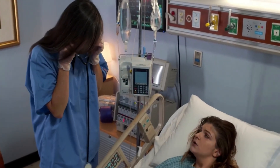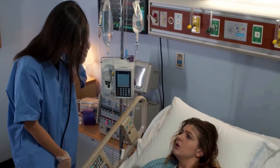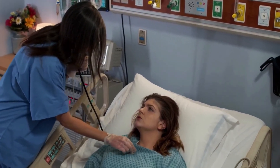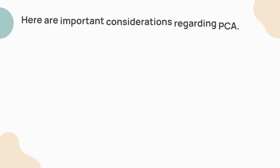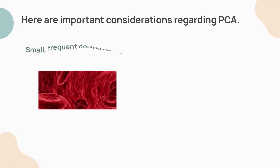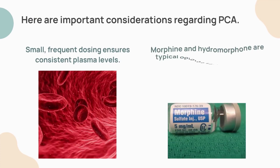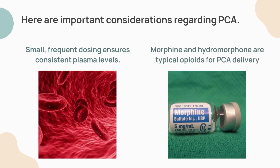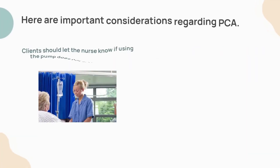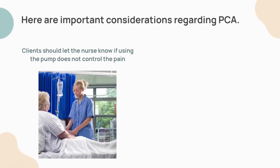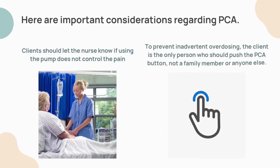Patient-controlled analgesia (PCA) is a medication delivery system that allows clients to self-administer safe doses of opioids. Small, frequent dosing ensures consistent plasma levels. Morphine and hydromorphone are typical opioids used for PCA delivery. Clients should notify the nurse if the pump does not control the pain. To prevent inadvertent overdosing, only the client should push the PCA button — not a family member or anyone else.